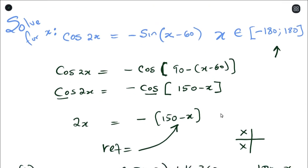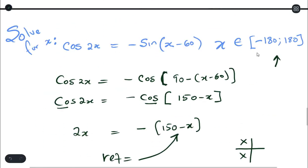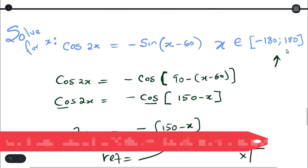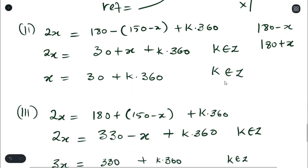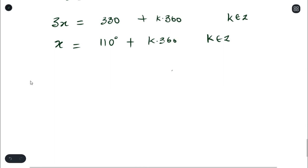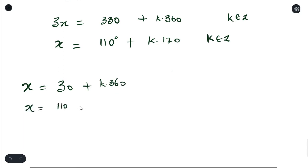The question asks us to solve for x, not just find the general solution. To do that, you first get the general solution, then substitute integer values of k that give answers within the range −180 to 180. Let's try substituting k = −1, 0, and 1.